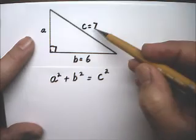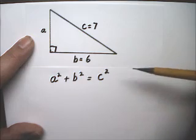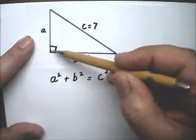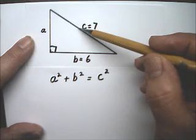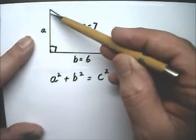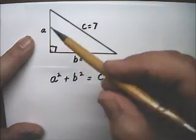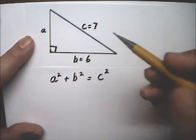The hypotenuse is usually labeled C. The hypotenuse is the longest side. It's the side that's opposite the right angle. So the hypotenuse will never be touching the right angle. The hypotenuse touches these two acute angles, but not the right angle.